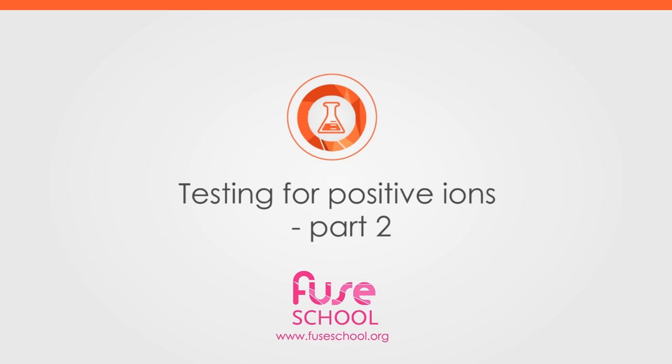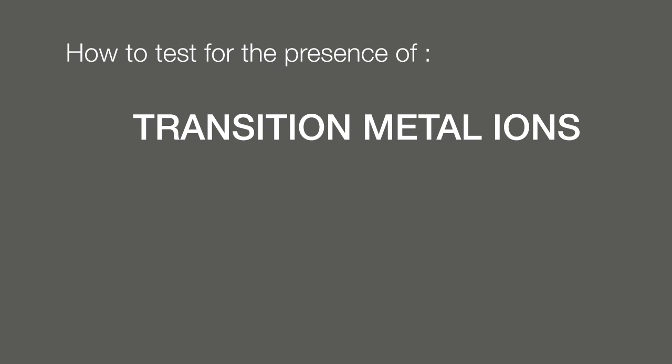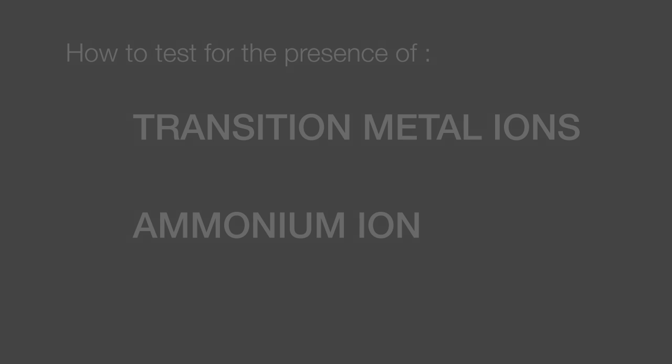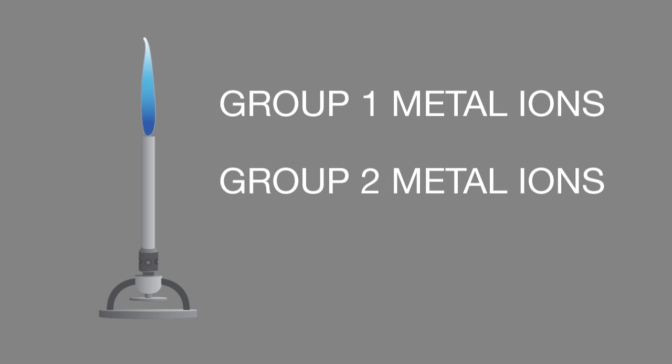In this lesson, we will learn how to test for the presence of transition metal ions and the ammonium ion. A flame test may be used to test for the presence of Group 1 and Group 2 metal ions, as well as for the copper 2 plus ion.